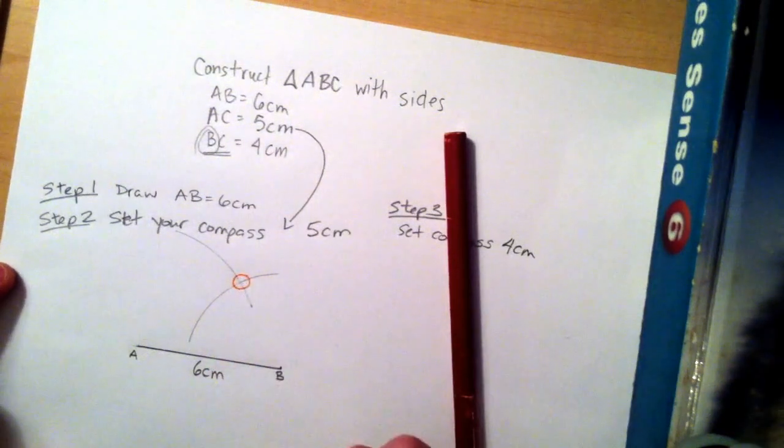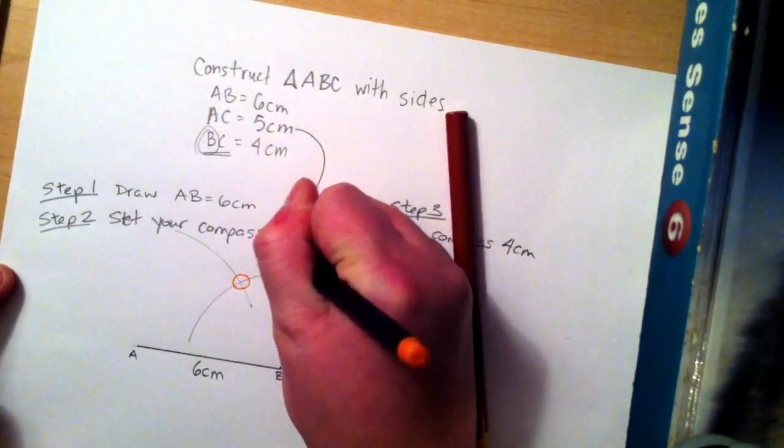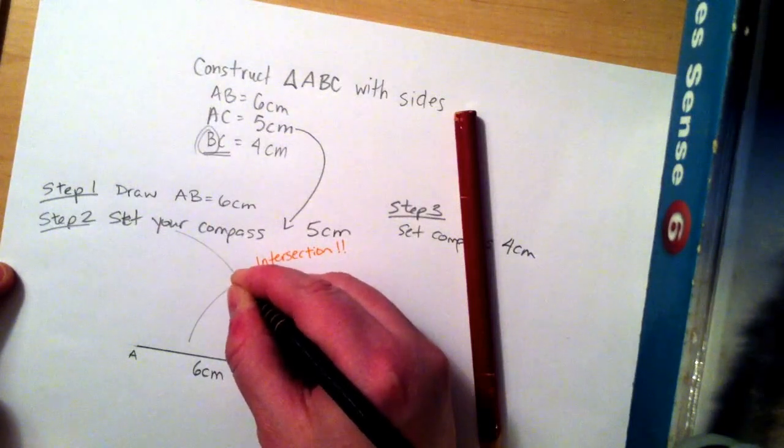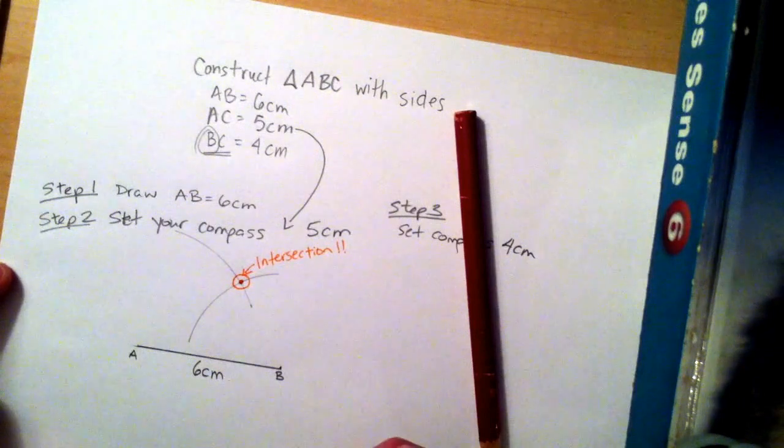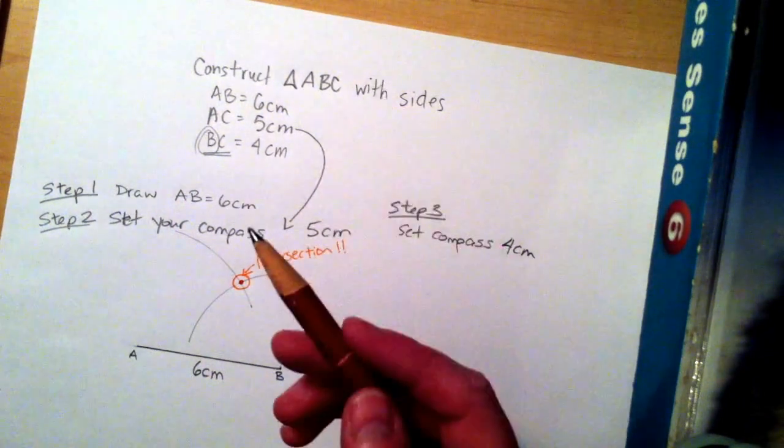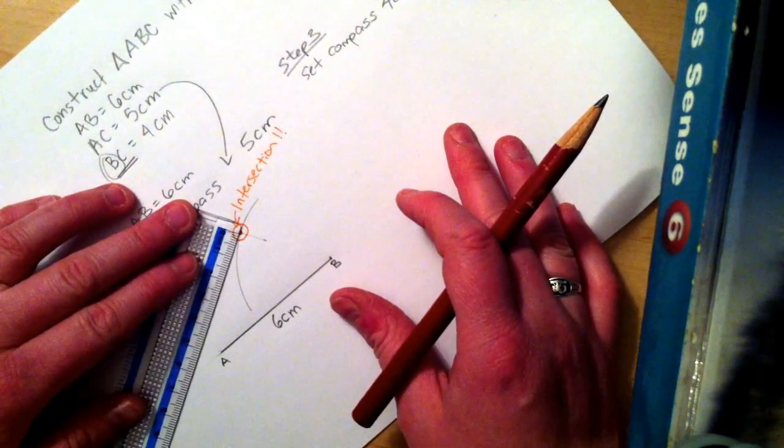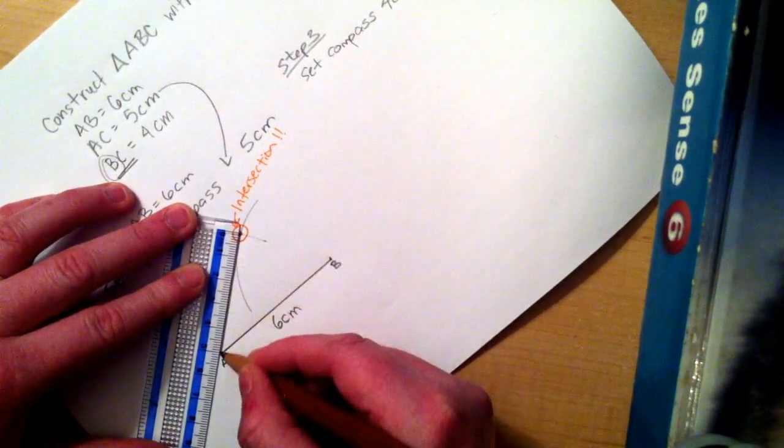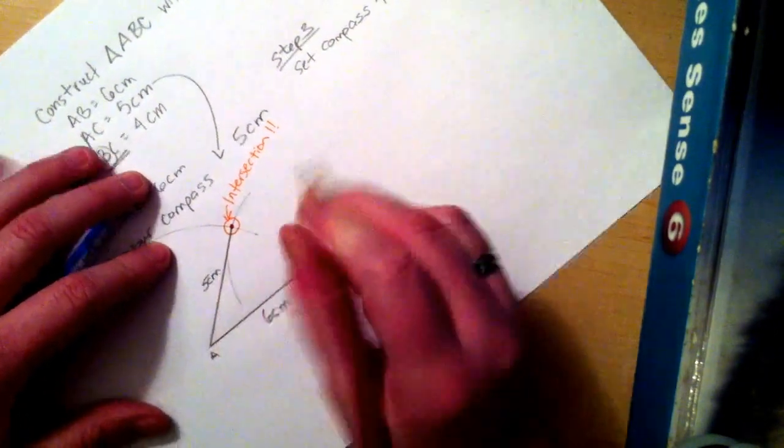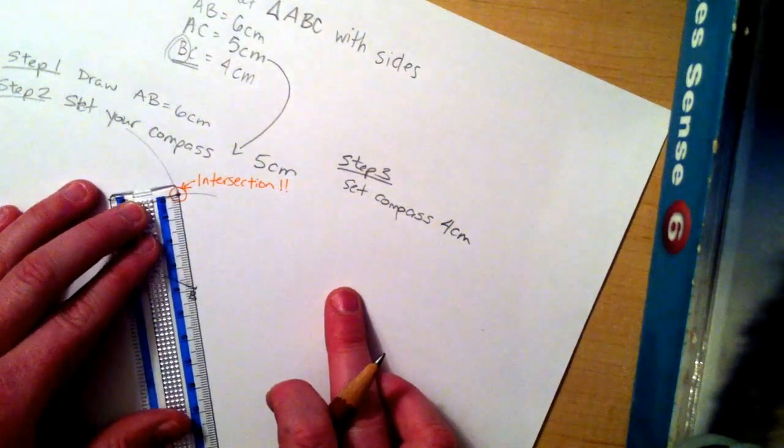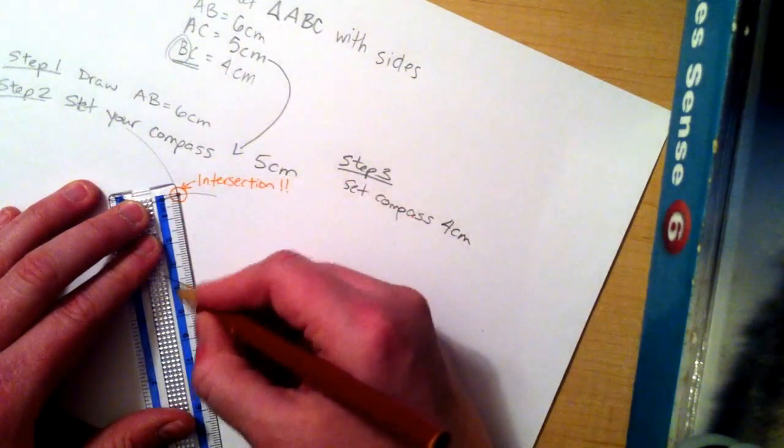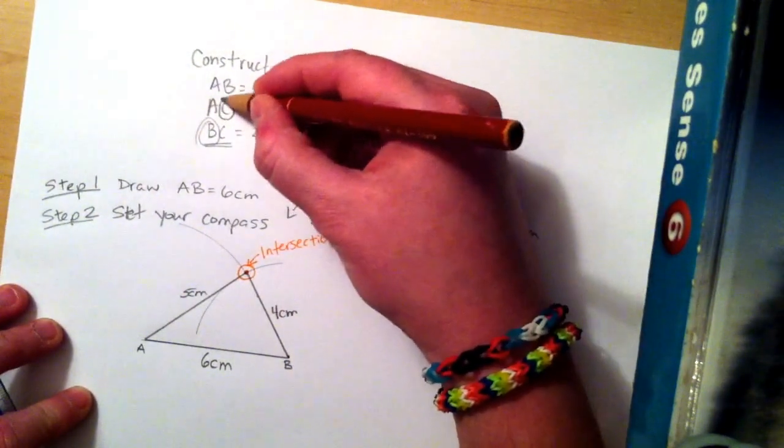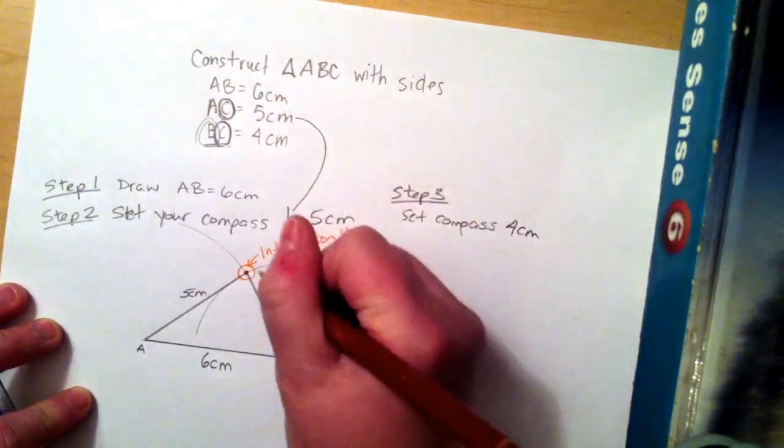Here's where the magic happens. Where those two lines intersect, that becomes our third point. That becomes our intersection of the two arcs. And we can label that and connect it with our other line AB. And that line there would be our 5 cm, and connecting the intersection with point B, 4 cm. And we need to remember to label that C.